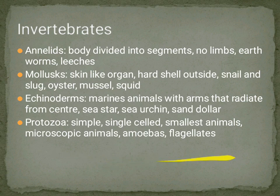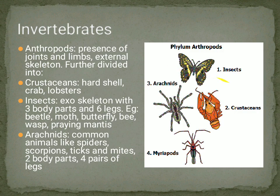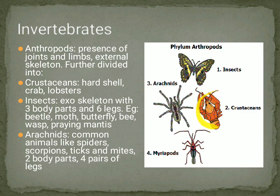Protozoa are single-celled organisms like phytoplankton, amoeba, and small algae. Phylum Arthropoda is a group with jointed legs and antennae — like butterflies which have two antennae. Crustaceans are arthropods with a very hard shell, like crabs you can see at the beach.